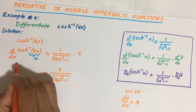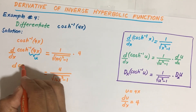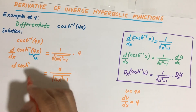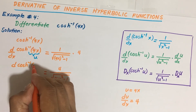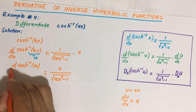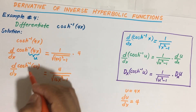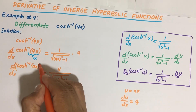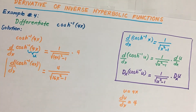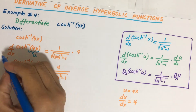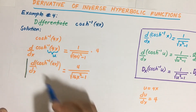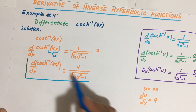This is our derivative of the inverse hyperbolic function of 4x with respect to x. So this is our final answer.